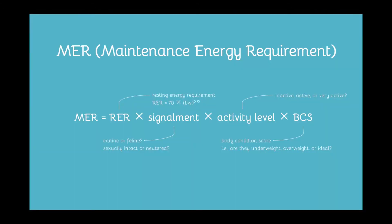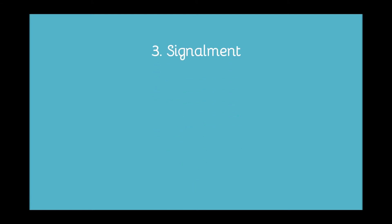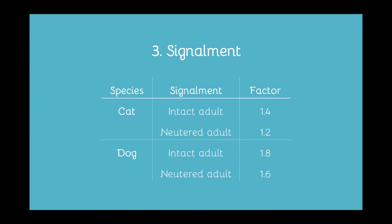The next step is looking at signalment. Signalment is just the term we use in the veterinary profession to describe a pet's species and reproductive status. This is because cats and dogs have different energy requirements, and intact pets are going to require more energy than spayed or castrated pets. The factor in the far right column is the number you are going to put into the MER equation — whichever factor matches up best with your pet's signalment is the one you're going to want to write down.